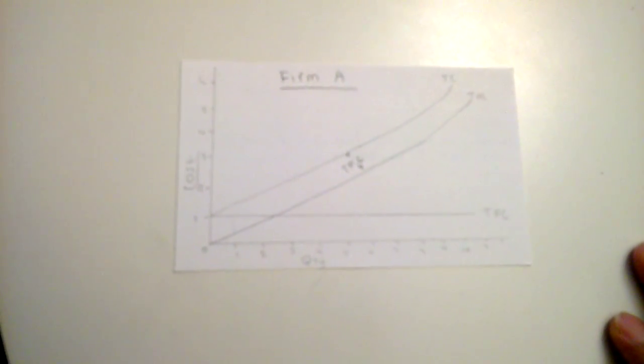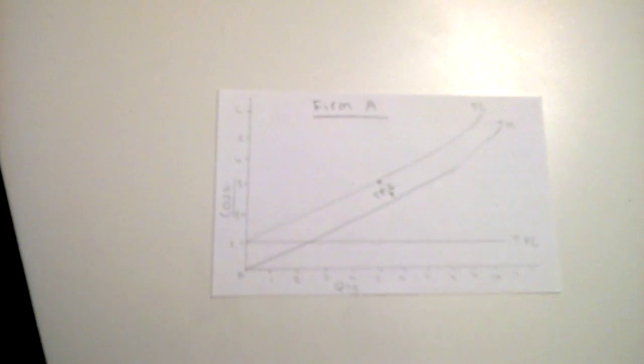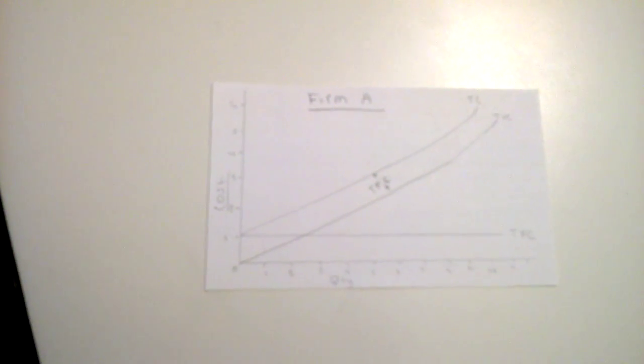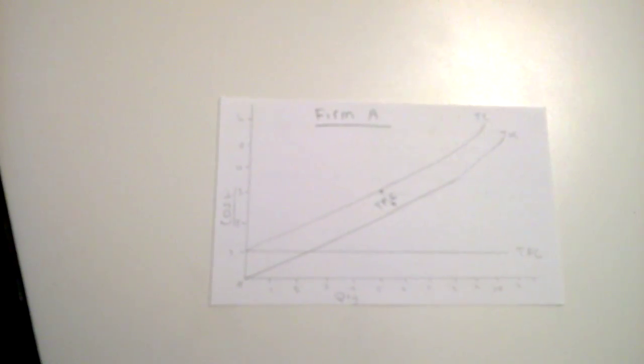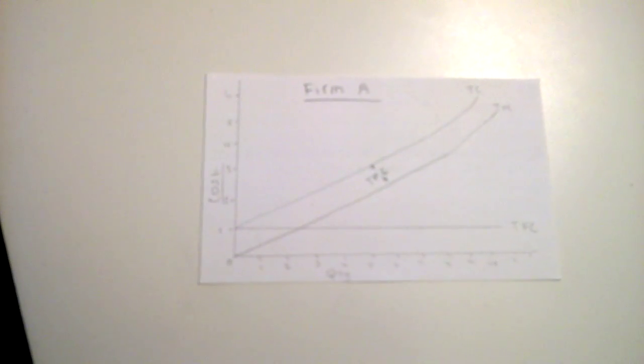An example in our life of a total fixed cost is rent. We pay rent and it's fixed. Even if we go on a vacation for a week or even two weeks, we still have to pay that same rent. It does not matter. We have to pay that fixed cost in order to live at that place.